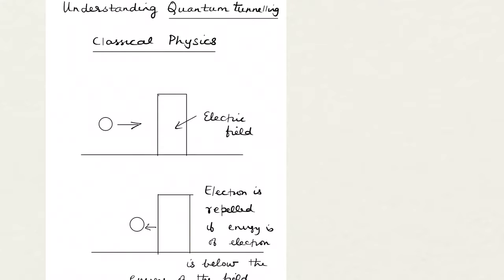Now let us see what happens in typical classical physics. Imagine we have a particle moving towards a barrier. This block is a barrier. If this particle doesn't have sufficient energy to pass through this barrier, it will naturally rebound back.